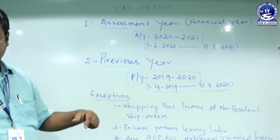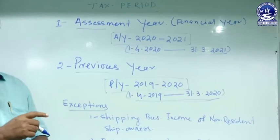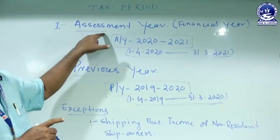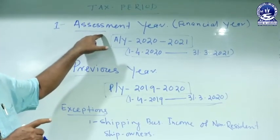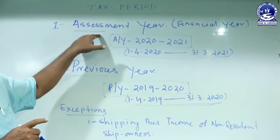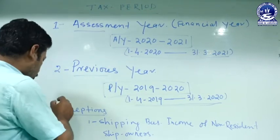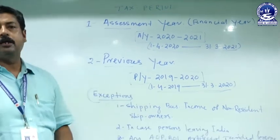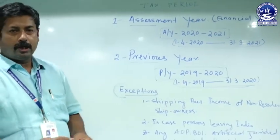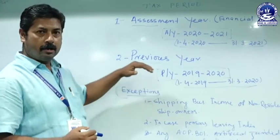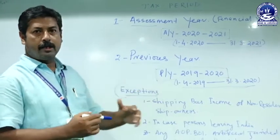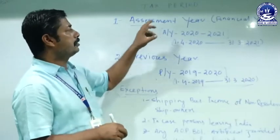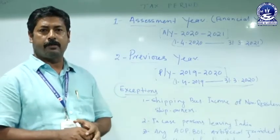As per the law, a person's total income derived in the previous year makes them liable to pay the tax in the assessment year. So the general rule is: income derived in the previous year, tax paid in the assessment year.